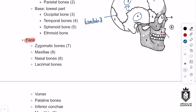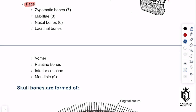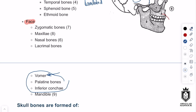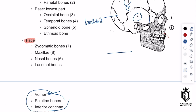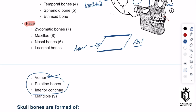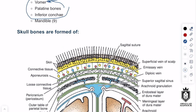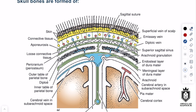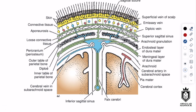Some bones aren't apparent on 2D imaging. There is the vomer, which is at the back of the nose — the nose is like a large box inside the skull with an anterior opening called the anterior aperture. At the back is the vomer bone, on the floor of the nose are the palatine bones, and inside the nose are the inferior conchae.